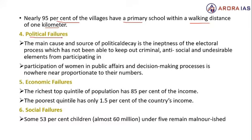अब देखते हैं political failures। जहाँ achievements हुईं, वहाँ कुछ areas में failures भी देखने को मिले। The main cause and source of political decay is the inaptness of the electoral process, which has not been able to keep out criminal, anti-social, and undesirable elements from participating in elections। इन elements की participation के कारण political failures देखने को मिल रहे हैं।